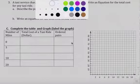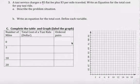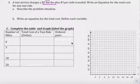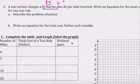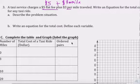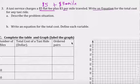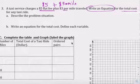A taxi service charges a $5 flat fee, so $5 flat fee, plus $3 per mile. Per means times, times the number of miles traveled. Okay, write an equation, write an equation for the total cost for any taxi ride.